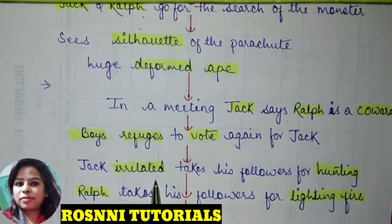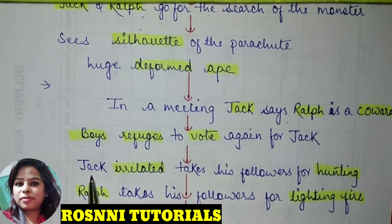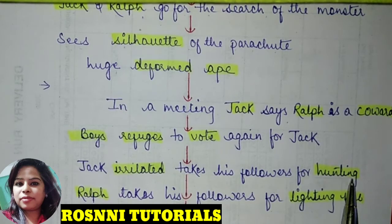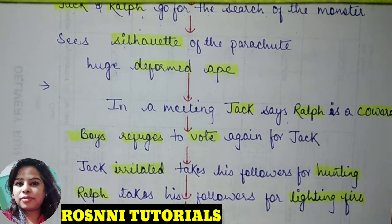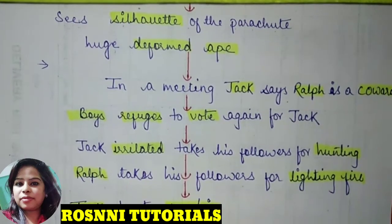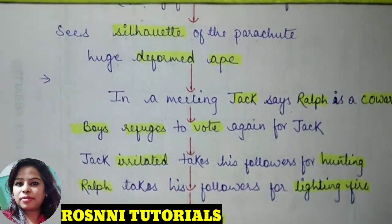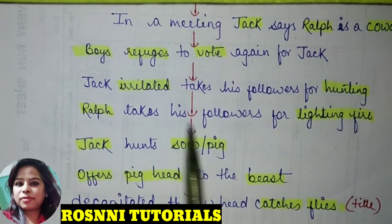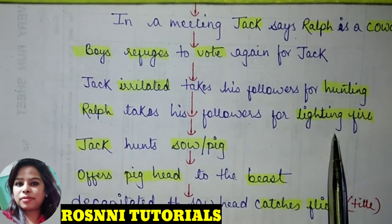Jack was so irritated that he left with his hunters. Ralph took his followers to light the signal fire because they still required help and wanted someone to rescue them. Ralph went along with his followers to light the fire.